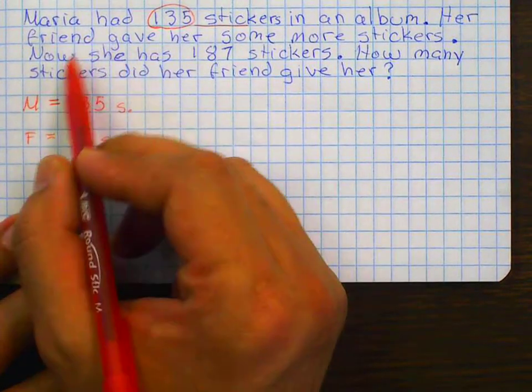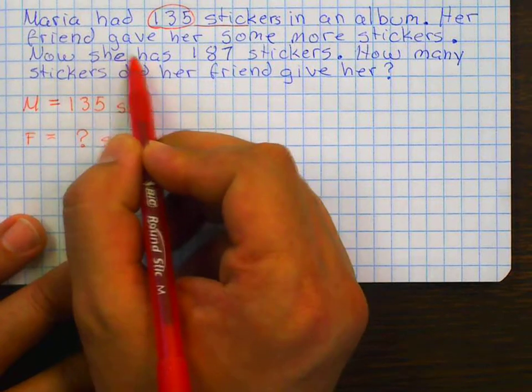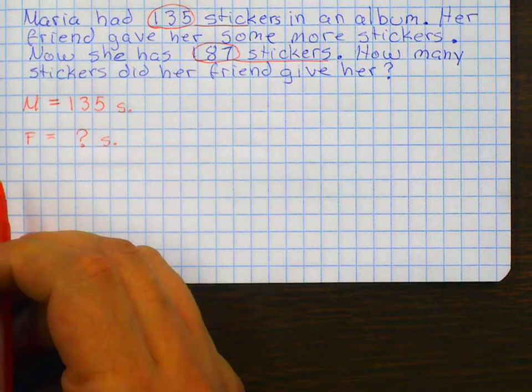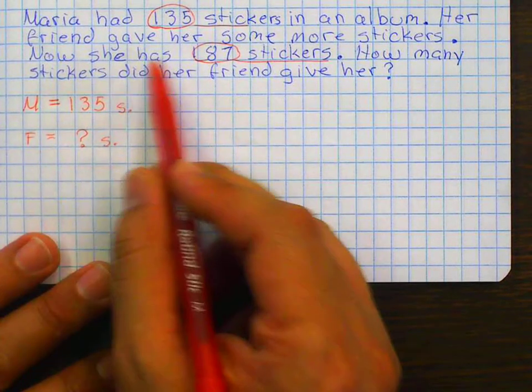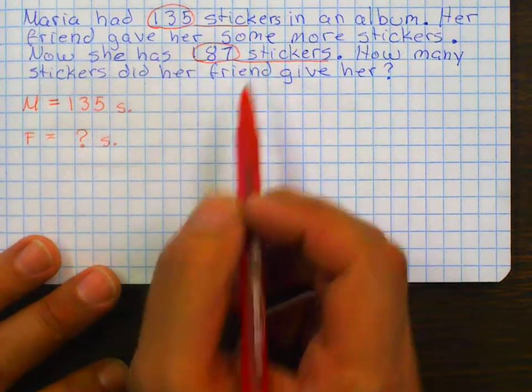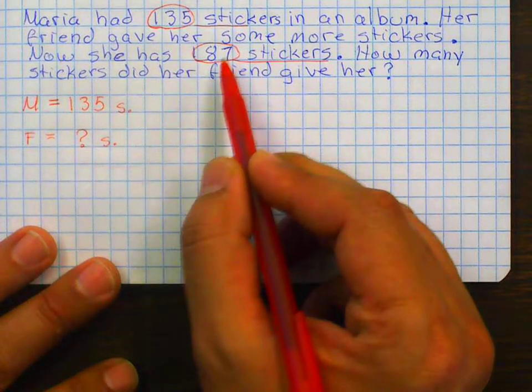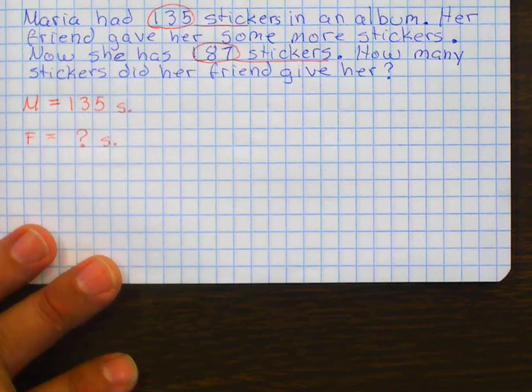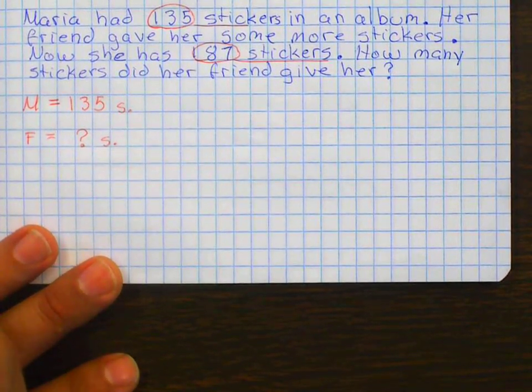Next sentence is, now she has 187 stickers. Now she has 187 stickers. What would that represent, that 187? Would it be my total? Would it be my parts? Total.